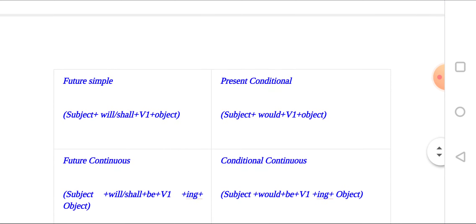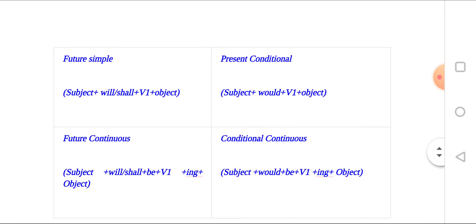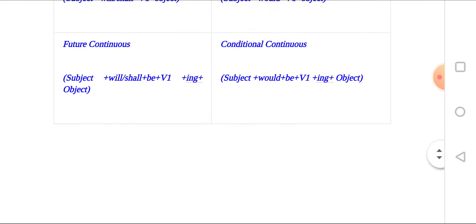Future continuous: the condition changes so that subject plus 'will' or 'shall' plus 'be' plus verb-ing plus object becomes subject plus 'would' plus verb first form plus object.